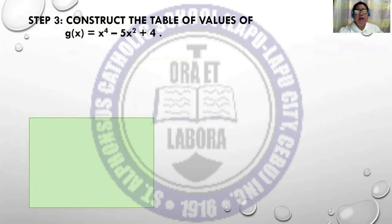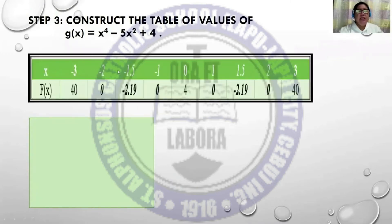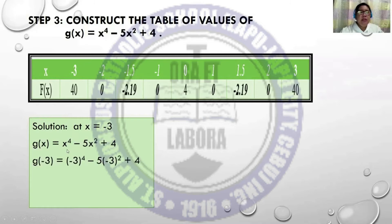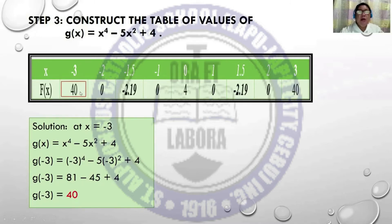Then construct the table of values of the given function. These are the values of x and the corresponding values of f(x) or y, starting with -3 as the lower bound going to +3 as the upper bound, including the zeros, y-intercept, and turning points. For example, at x = -3, substituting into the function gives (-3)⁴ - 5(-3)² + 4, which equals 81 - 45 + 4 = 40.